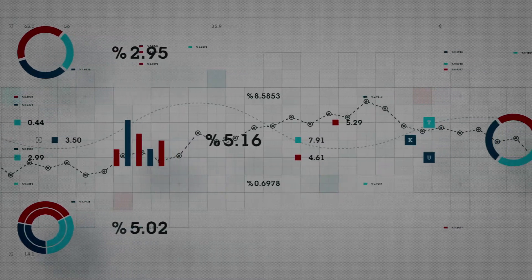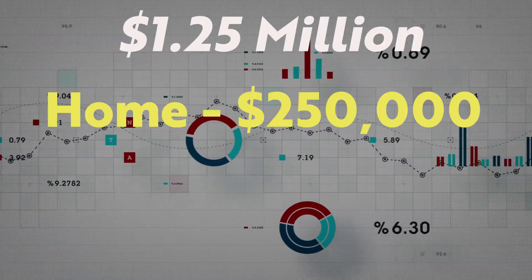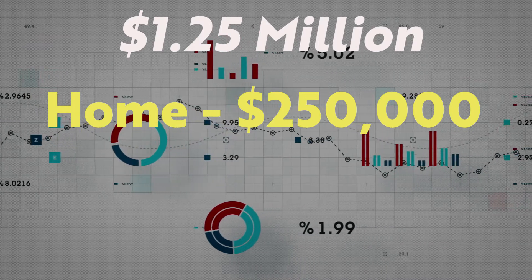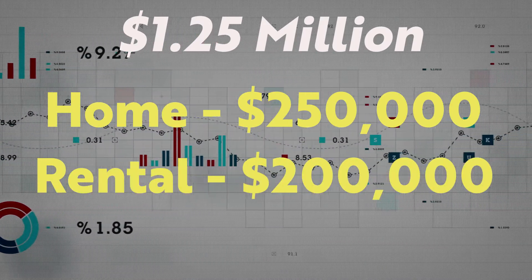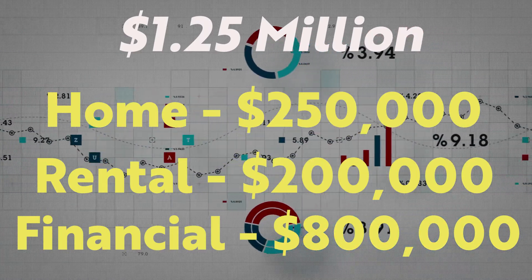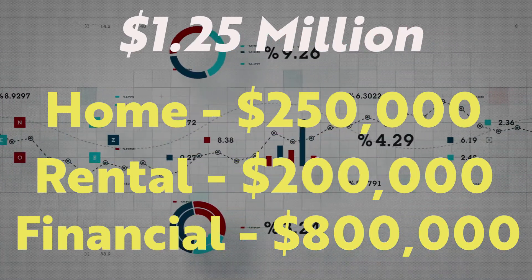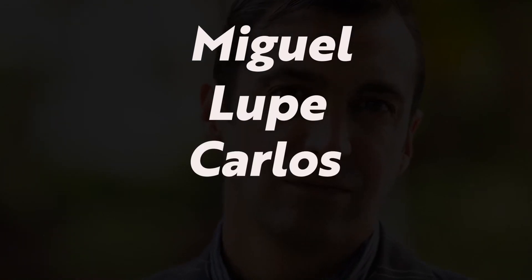Upon Juanita's death, the total estate was worth $1.25 million. The family home was worth $250,000, the rental property was worth $200,000, and the financial accounts had $800,000 worth of cash, stocks, and bonds. After Juanita died, her son Miguel took over as sole trustee of the trust. The four equal beneficiaries of the trust are Miguel and Lupe, along with their two brothers, Carlos and Damian.